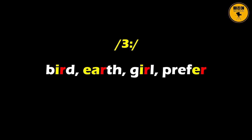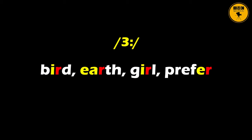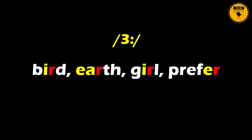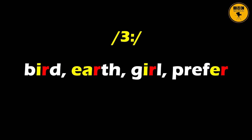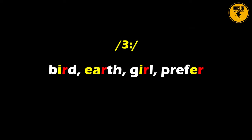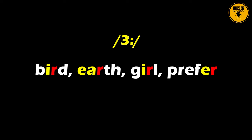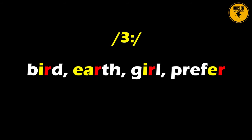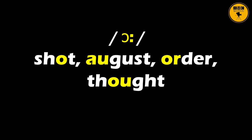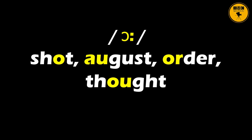We move on to the seventh monophthong sound as found in words like bird, earth, girl, prefer. You might be wondering why the letter R is also in these words. We do not pronounce the letter R when it is followed by a consonant or when it is the last letter of a word. So we have: bird, earth, girl, prefer — 'the girl prefers the earth to the bird.'